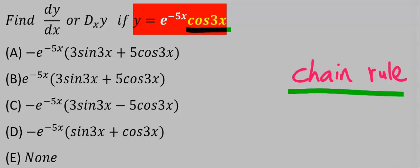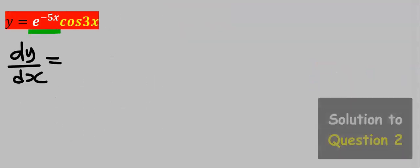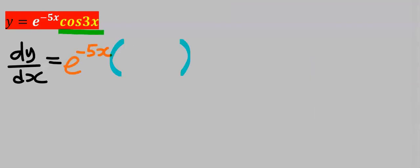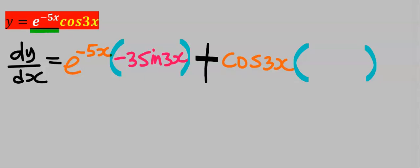By chain rule I will keep exponential minus 5x constant. Next I will differentiate cos 3x using chain rule and I'm going to have minus 3 sine 3x. Next I will put a plus. I'm going to keep cos 3x constant, then I will differentiate exponential minus 5x and by chain rule I'm going to have minus 5 exponential minus 5x.